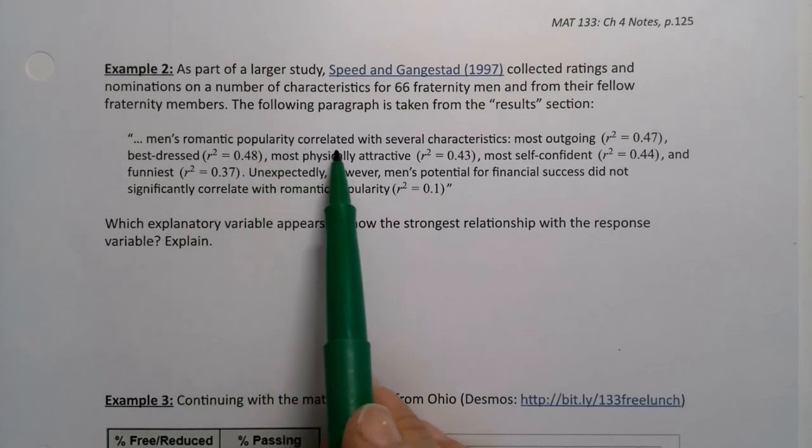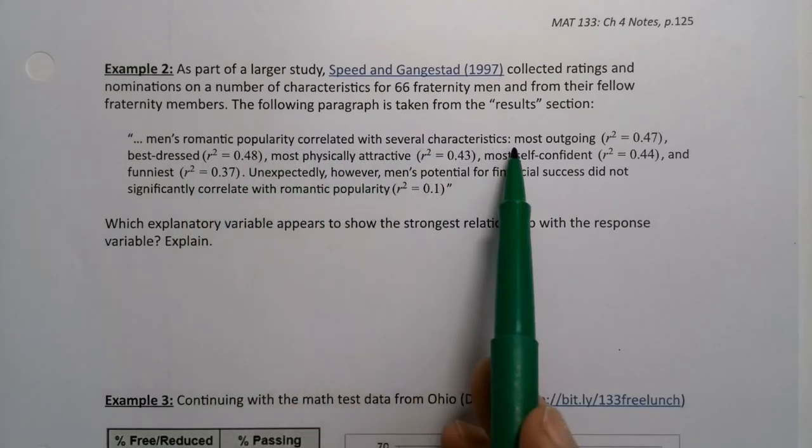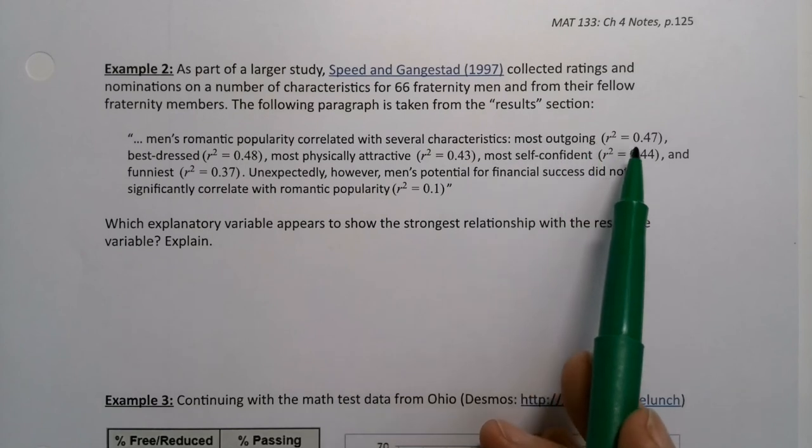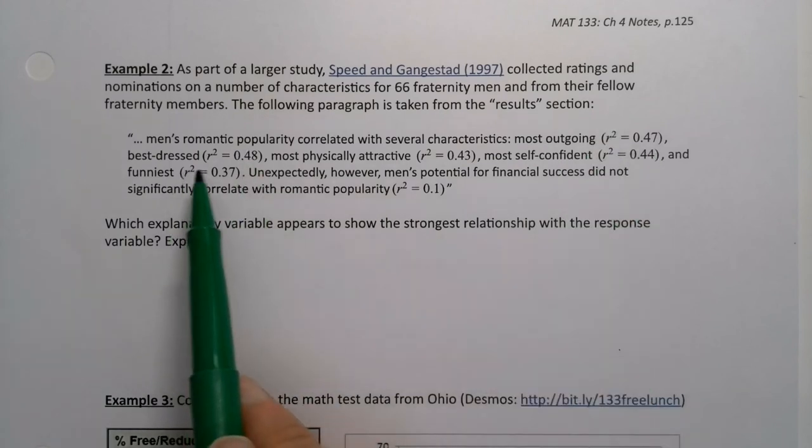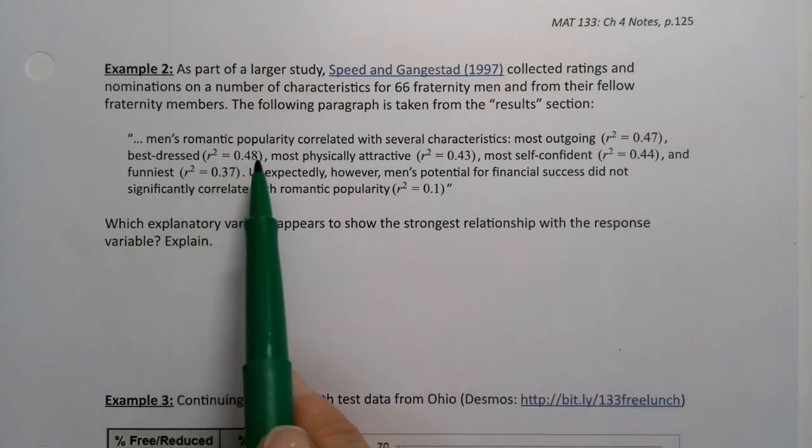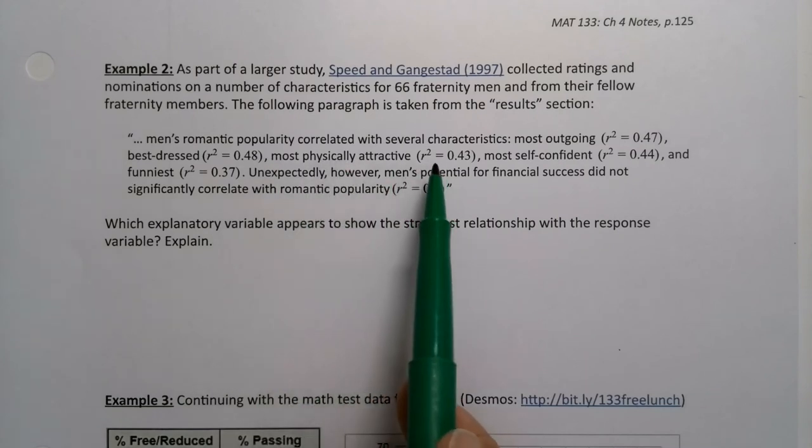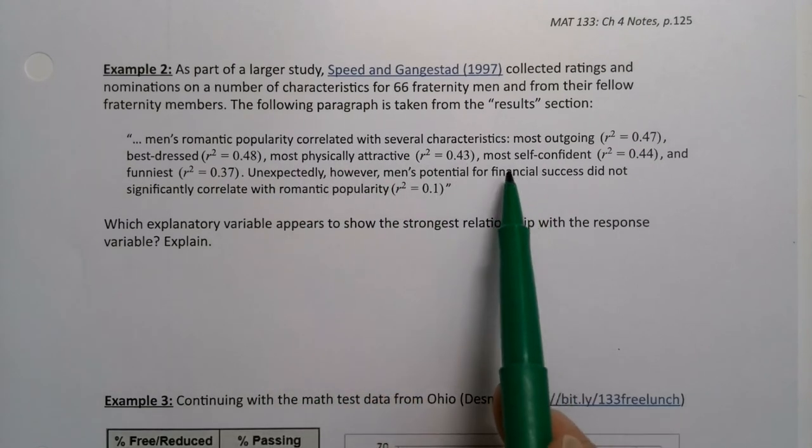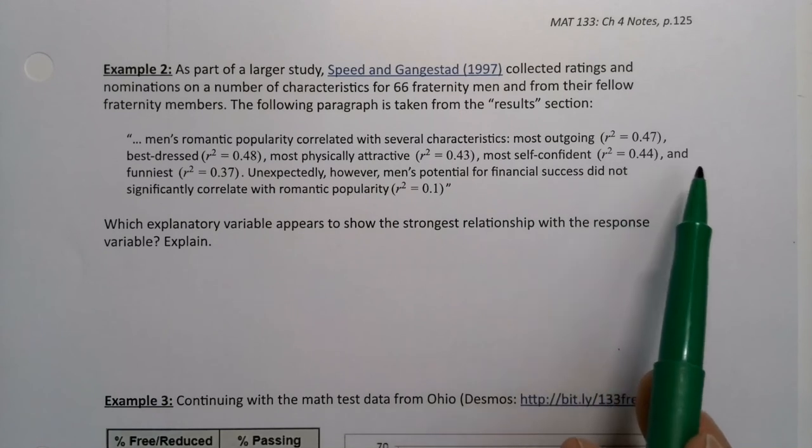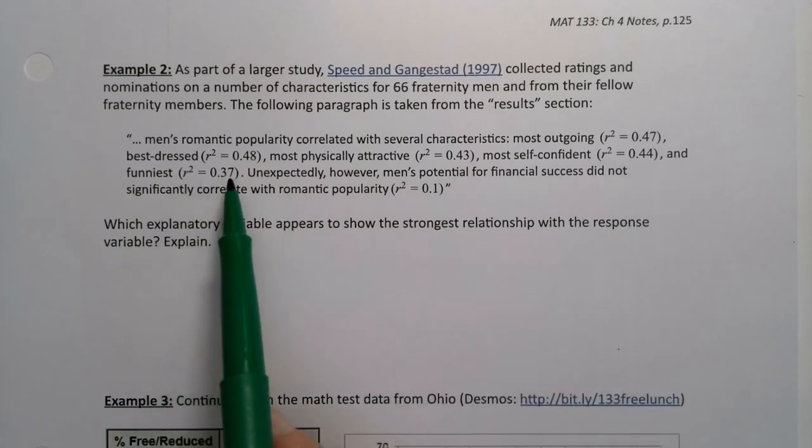Men's romantic popularity is correlated with several characteristics. Most outgoing, R-squared equals 0.47. Best dressed, R-squared equals 0.48. Most physically attractive, R-squared equals 0.43. Most self-confident, R-squared equals 0.44. And funniest, R-squared equals 0.37.